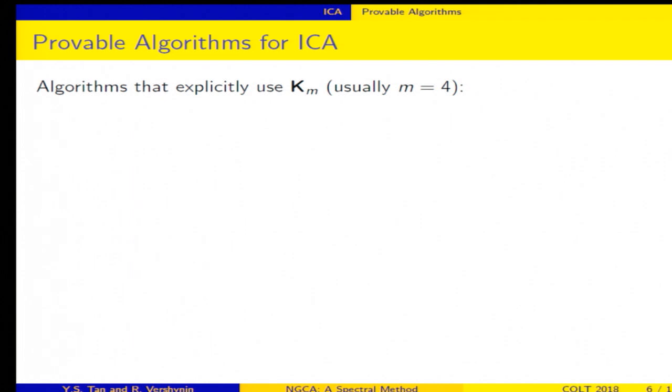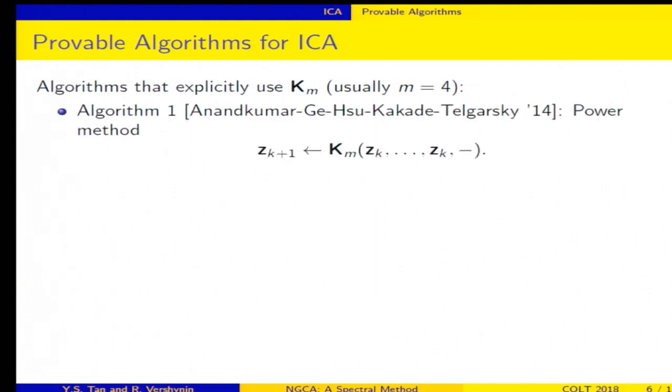Okay, so here are some provable algorithms. Okay, so first here are some algorithms that explicitly use KM. So here's the first one. The first one is a power method, and the point is to realize that the tensor eigenvectors are the attracting fixed points of this power iteration map. So by running this power iteration, you're going to end up at one of these eigenvectors, and then you just repeat the process.